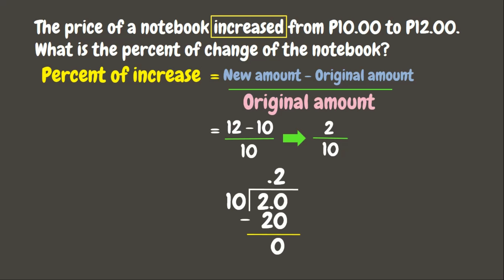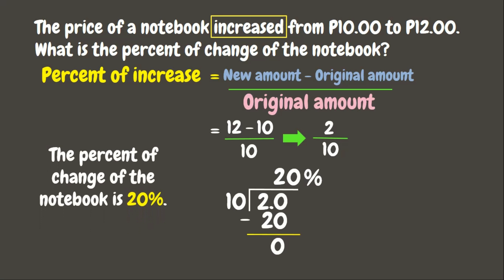Since we are looking for the percent, we need to change the decimal into percent. Let's move the decimal point two times to the right and put zero in the empty place value, then change the decimal point into a percent sign. Our final answer is twenty percent. This means that the percent of change of the notebook is twenty percent.